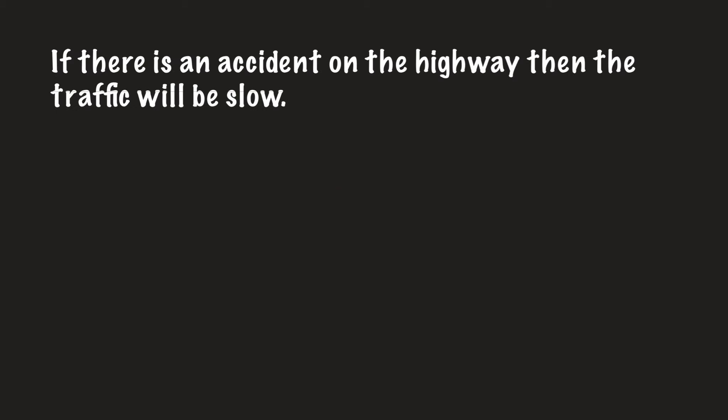We're going to look at the example: if there is an accident on the highway, then the traffic will be slow. The first thing we're going to do is put it into the hypothesis and conclusion — the antecedent and the consequence — so we have it in its mathematical form. The mathematical form is if P then Q.